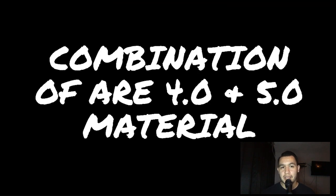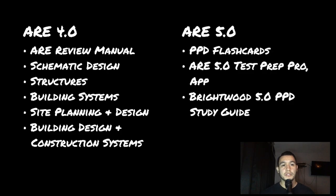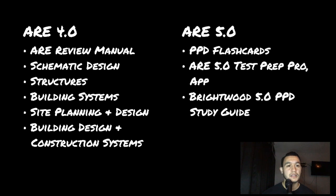Along with the Brightwood flashcards and apps, I'll be using a combination of 4.0 and 5.0 study material. The 4.0 and 5.0 cover almost the same material, just reformatted, but the 4.0 study guide goes further in depth and gives you a better understanding of the material covered in the 5.0 exam. So I'll be using the 4.0 ARE Review Manual and all of Kaplan 4.0 Schematic Design, Structures, Building Systems, Site Planning and Design, and Building Design and Construction Systems study material, along with the 5.0 PPD flashcards and apps. I'll then summarize my knowledge with the Brightwood 5.0 PPD study guide.